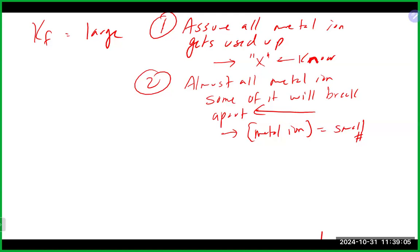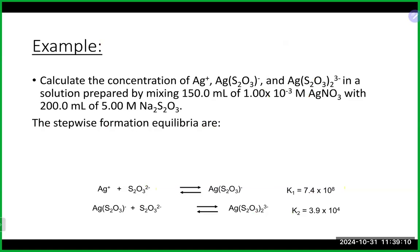Let's try one. We're not going to keep the volumes constant, so you need to take that into account. There's also a stepwise dissociation happening, so we want the concentration of silver at equilibrium, plus the two intermediate and ligand species as well. We're mixing silver nitrate with sodium thiosulfate. See what you come up with.